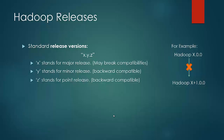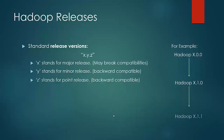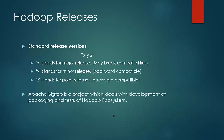Hadoop code won't break compatibility between minor and point releases, which means code written in Hadoop x.0.0 would be compatible with the minor release x.1.0 and the point release x.1.1. Hadoop is best known for its MapReduce and its distributed file system HDFS, but it has a family of projects around it which work well together. This is referred to as Hadoop's ecosystem.